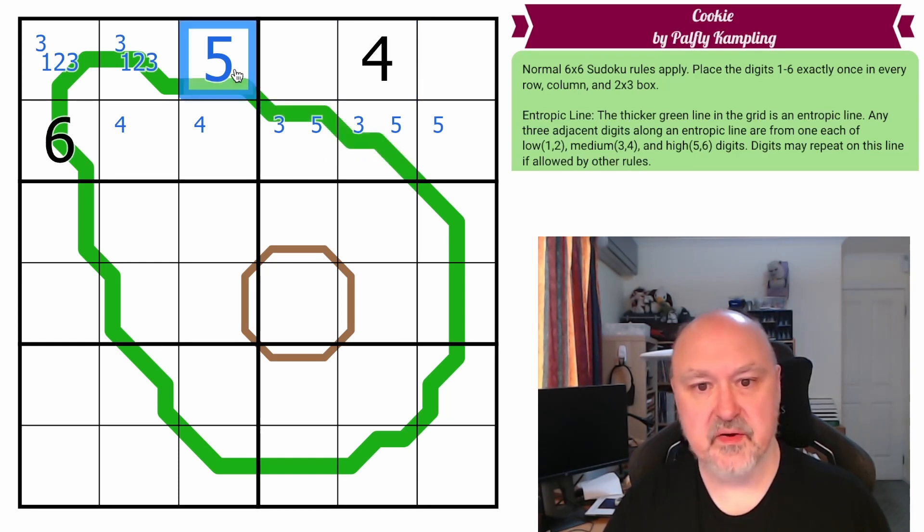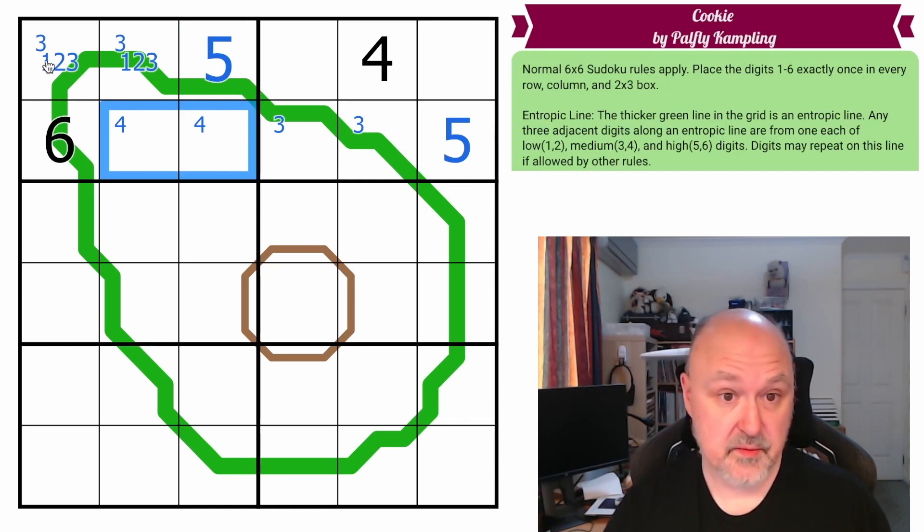These can't be the 5, because I can't have the 5 this close to the 5, because these have to be a low and a medium to go with the high digit. So, this becomes the 5. These are a low and a medium, and these are a low and a medium.